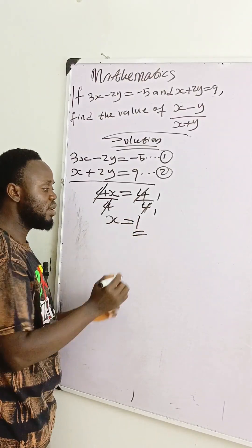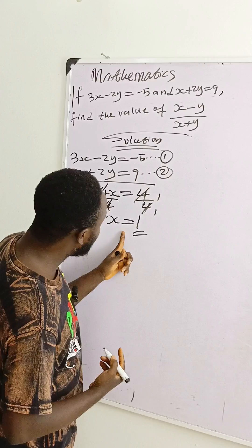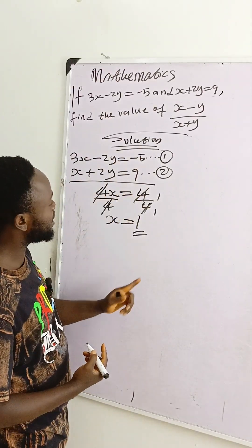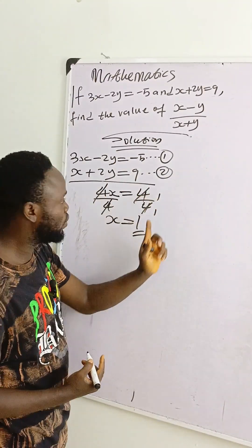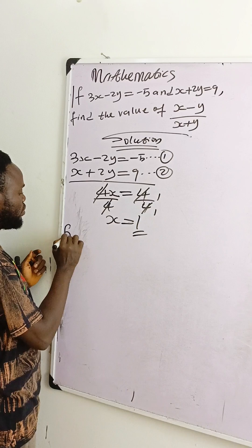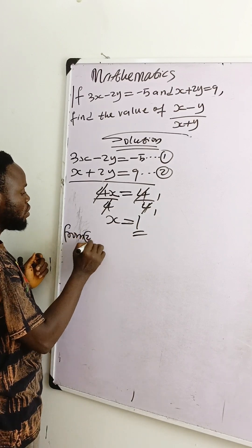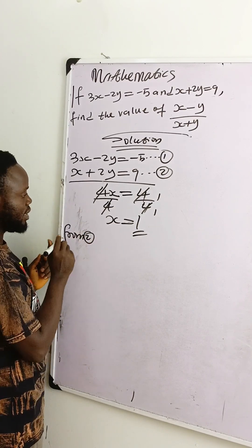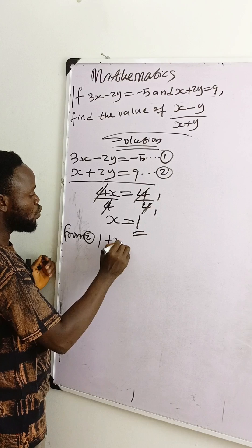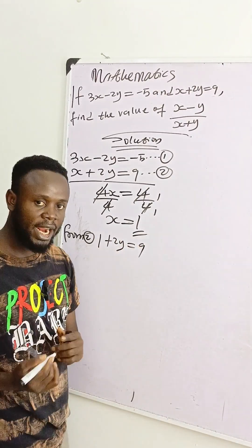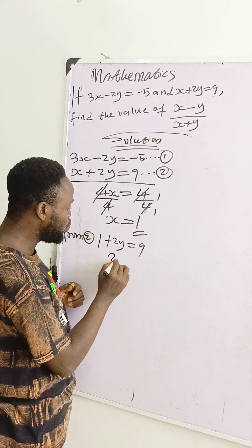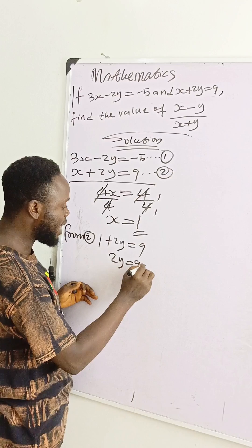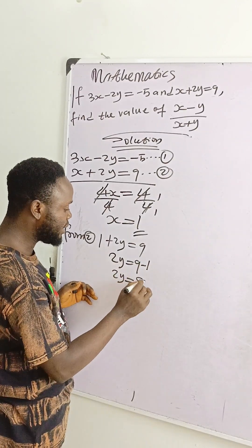If we have the value of x as equal to 1, let's substitute the value of x in either of these equations. Either equation 1 or equation 2. Let's work with equation 2. From equation 2, we write 1 plus 2y is equal to 9. Then 2y is equal to 9 minus 1, and 2y is equal to 8.